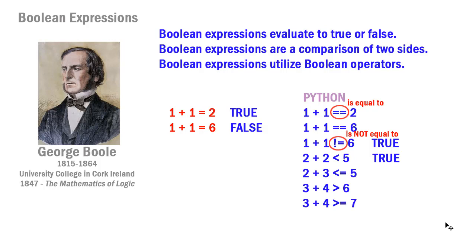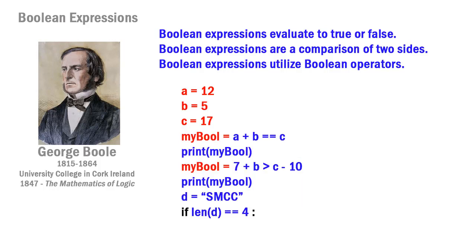We also have greater than (e.g., 3 + 4 > 6, which is true) and greater than or equal to (e.g., 3 + 4 >= 7, which is true). So our six operators are: equal to, not equal to, less than, less than or equal to, greater than, and greater than or equal to. You'll find those six in every programming language — syntax may vary slightly, but the concepts are the same.